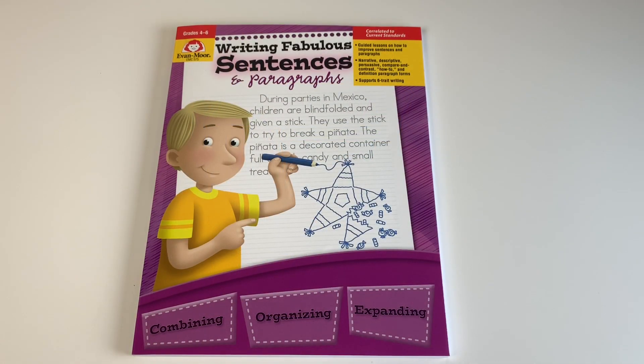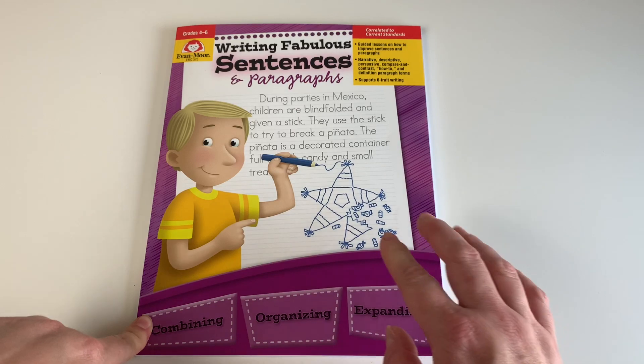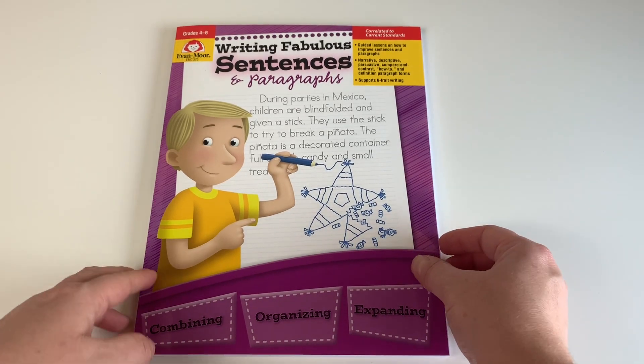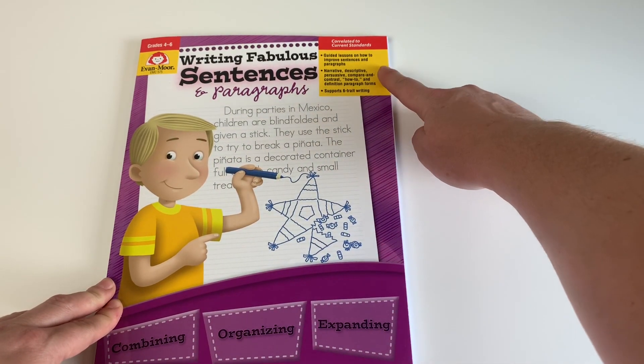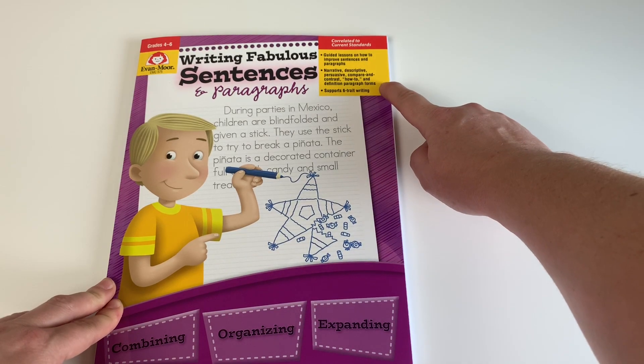To go along with that, we'll be using Writing Fabulous Sentences and Paragraphs by Evan Moore for grades four through six. So this book is just basically going to be something that she uses once a week to practice writing.